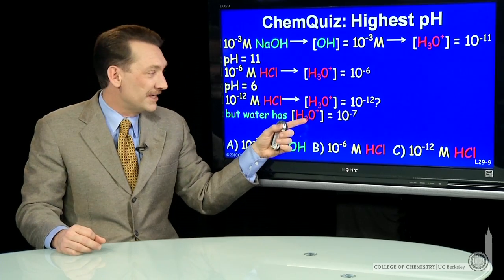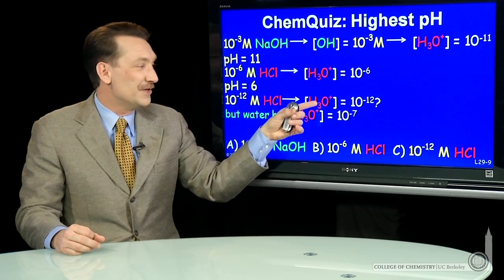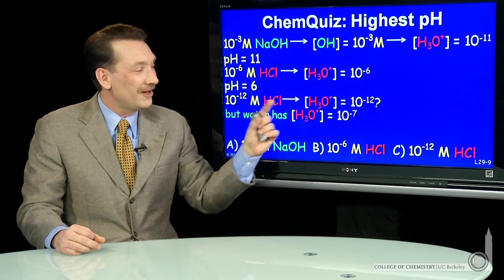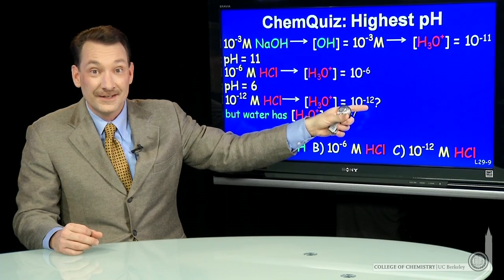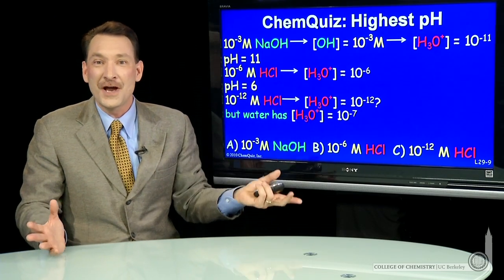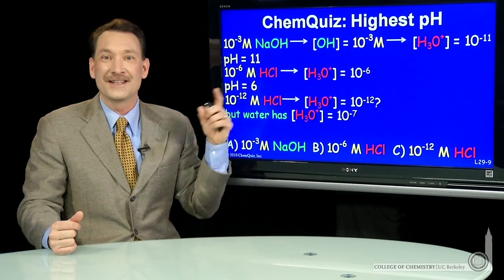So if you have water and the H3O plus concentration is 10 to the minus 7, and you add this tiny amount of HCl, well, that adds a very small, just 10 to the fifth less than is already there. So you barely change the pH of the pure water by adding this HCl.